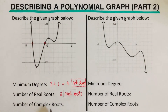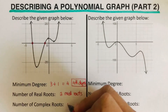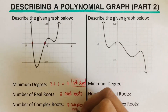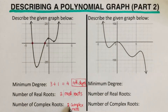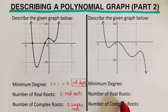To get the complex roots, remember that the minimum degree is the sum of both the real roots and the complex roots. Since the minimum degree is four and there are two real roots, there are also two complex roots — because two plus two equals four. I'd encourage you to pause this video, try this problem on your own, then unpause and check your answer.